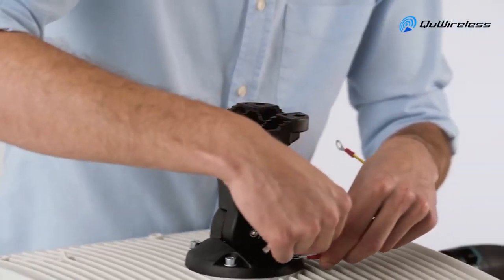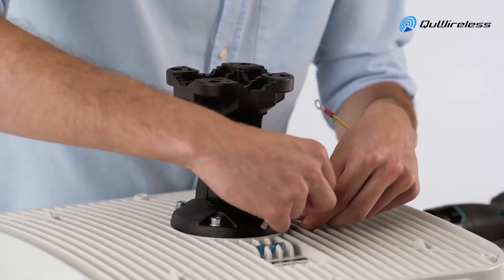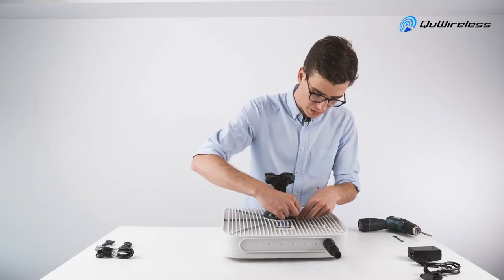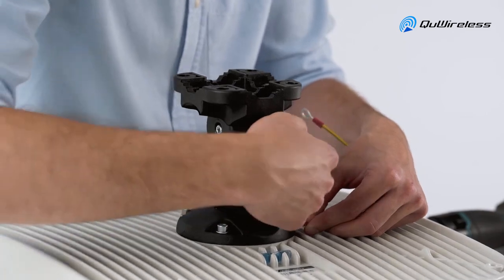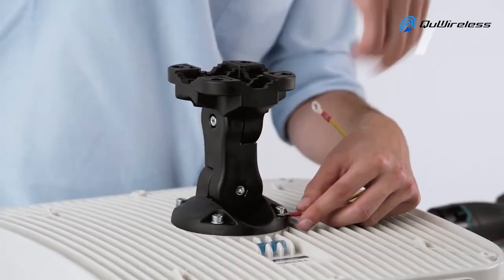What's important, with the last screw you need to remember about the grounding wire. It should be always installed on the right down side of the antenna.